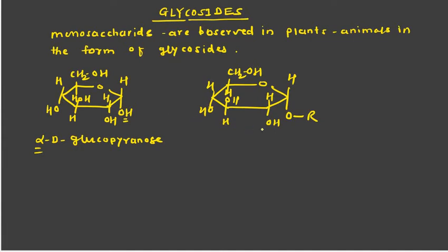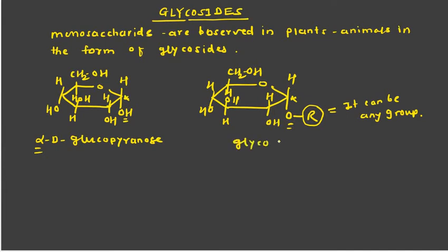Now observe the major difference between the two structures. The second structure is identical to the first except at the anomeric carbon: here the anomeric carbon is attached to an OR group instead of an OH group. This R can be any group. So the first is alpha-D-glucopyranose, and the second is a glycopyranoside — specifically the glucopyranoside of D-glucose.